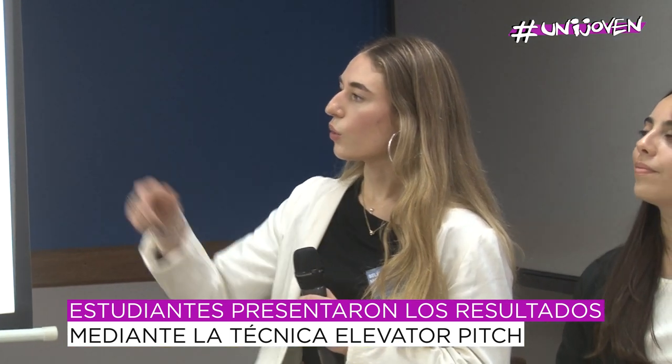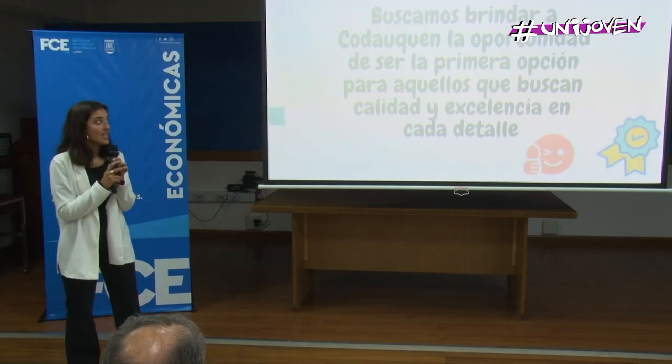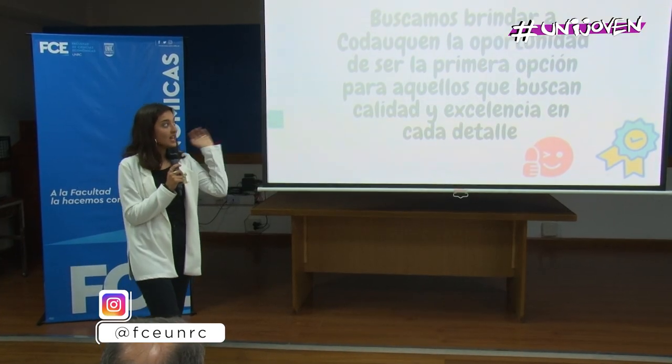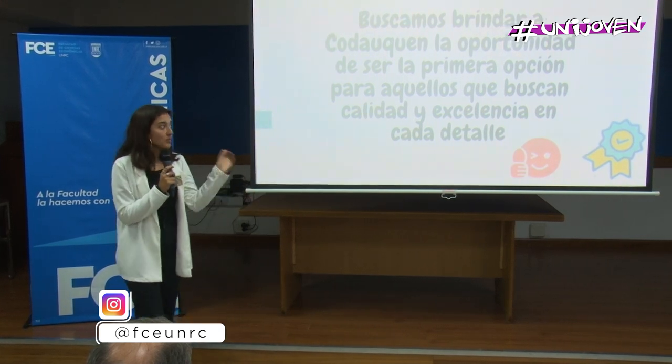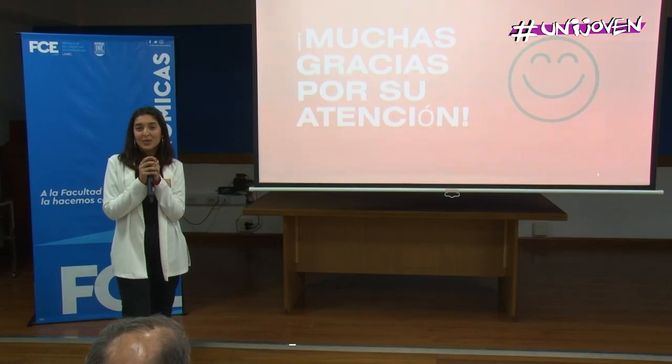En primer lugar, analizamos el producto. Podemos ver que los productos que más se venden son empanadas y pizzas, tablas de fiambres o sándwiches de bondiola, lo que indica una oportunidad de mercado para ofrecerlos si aún no se los está brindando. En conclusión, Kodauken tiene el potencial para formar parte del mercado ofreciendo productos de calidad y excelencia, en donde los clientes busquen detalles particulares que la cooperativa les va a poder brindar. Muchas gracias por su atención.